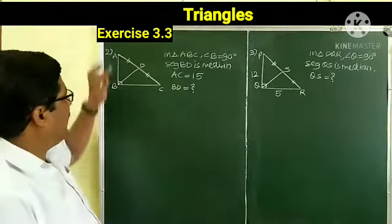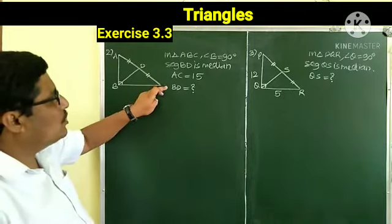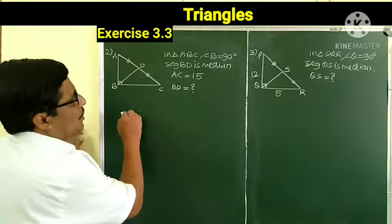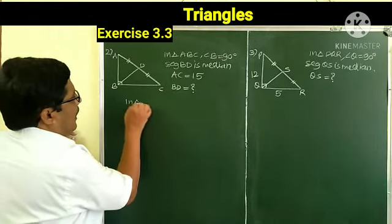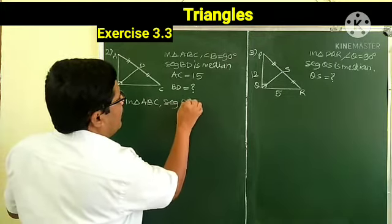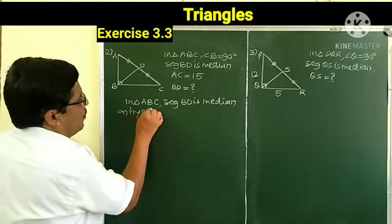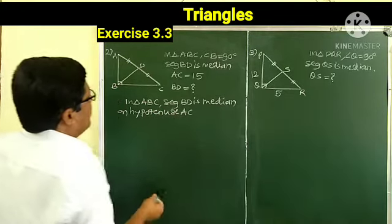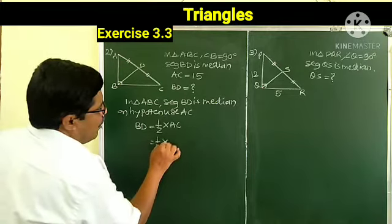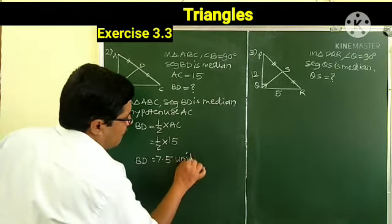Second example: in triangle ABC, angle B is a right angle and segment BD is the median on the hypotenuse. Using the theorem that the median drawn on the hypotenuse is half of the hypotenuse: BD equals half of AC equals half of 15 equals 7.5. So BD is 7.5 units.